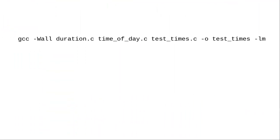Then type a command like this, which we're going to look at one piece at a time. Start with the name of the compiler you're using — in this case, GCC. If you're using the Clang compiler, type CLANG instead.